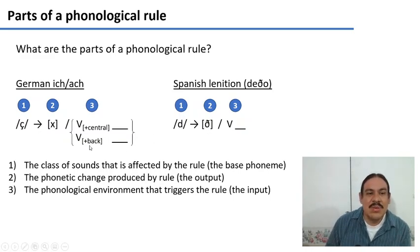When does this happen? Whenever there's a phonological environment that triggers the rule, basically the input of the rule. So whenever you see a back vowel and the palatal fricative, that palatal fricative is transformed into the velar.